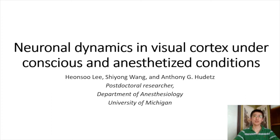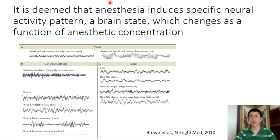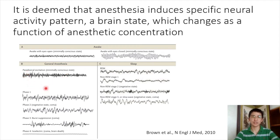Hi, my name is Hon Su Li. I'm a postdoctoral researcher from the University of Michigan. Today I'm going to talk about spiking patterns of individual neurons under conscious and anesthetized conditions. Before talking about spike activity under anesthesia, let's discuss brain state. We believe anesthesia induces specific neural activity patterns that change as a function of anesthetic concentration — at very low doses we see paradoxical excitation, in deeper anesthesia we see slower high-amplitude EEG, and at very high doses we see burst suppression.